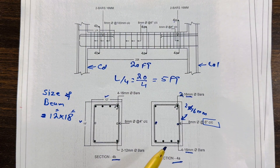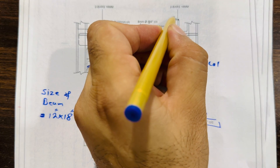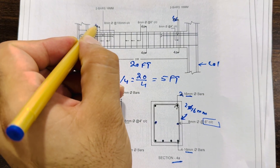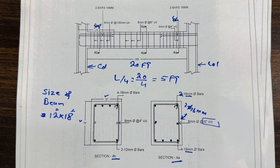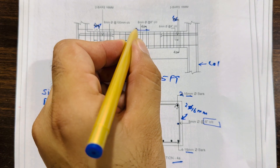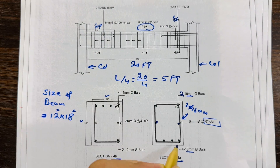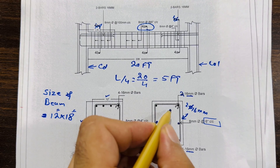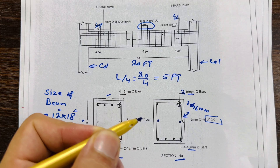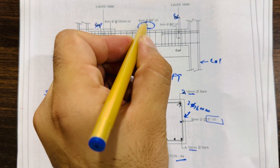At the distance of L/4, Section 4A applies at the midspan zone and Section 4B applies near the supports. In Section 4A, we have four bars at the bottom, two bars at the top, and two side bars. The stirrup spacing is 8 mm diameter at 6 inches center to center.